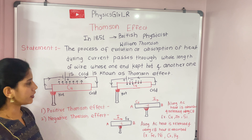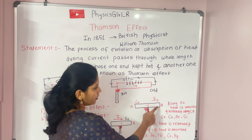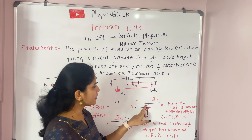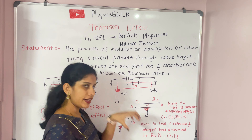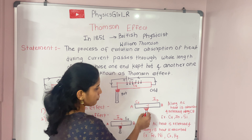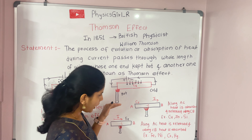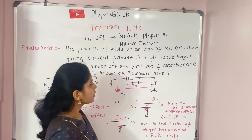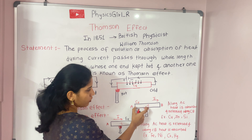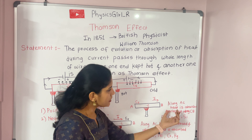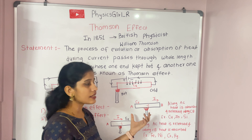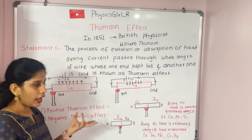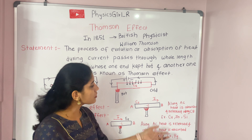The first is the positive Thomson effect. Consider a copper bar AB with its center at point C. We heat the center point C with a burner and flow current through the bar along the length from A to B. Then there is absorption of heat along the AC path and release of heat along the CB part. In this case, heat is transferred along the direction of flow of current, which is why this is called the positive Thomson effect. Examples include copper, zinc, and silver.